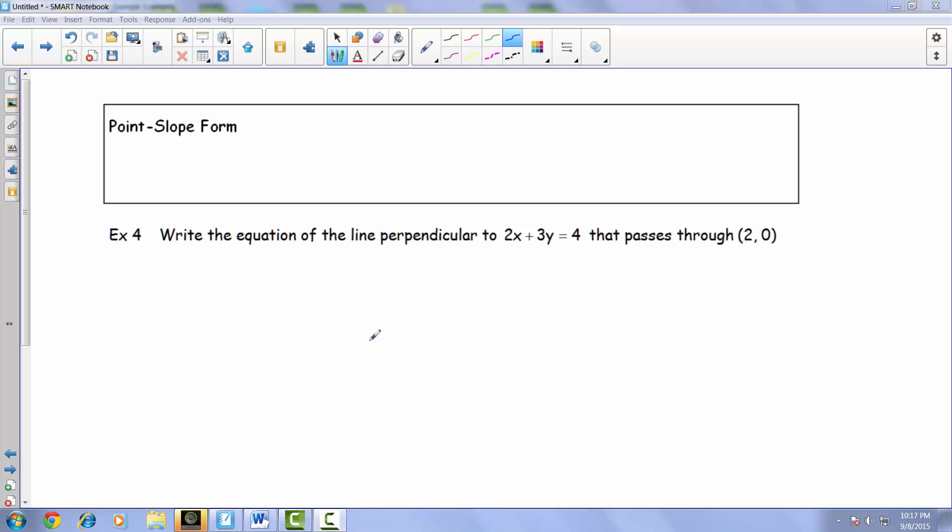Here we are at example four from our 2.4 number one set of notes. But before we dive into this example, we're going to look at something known as point-slope form.